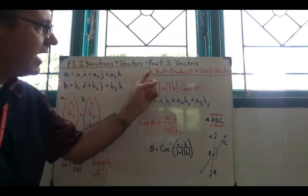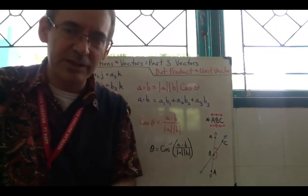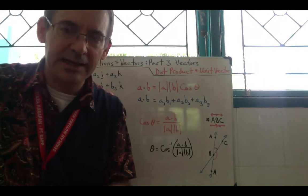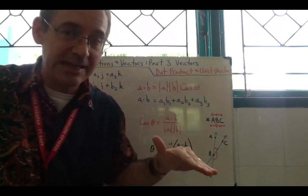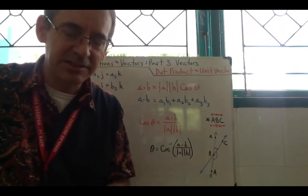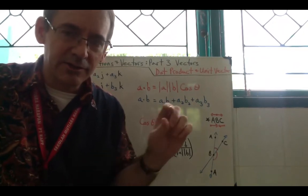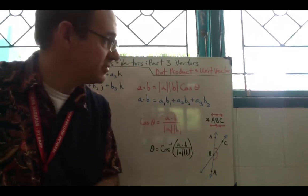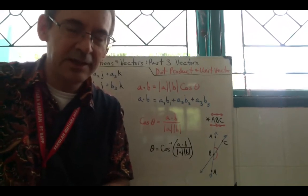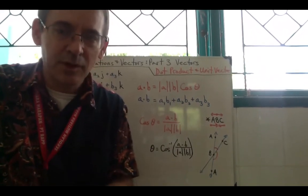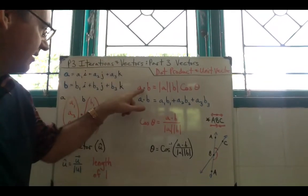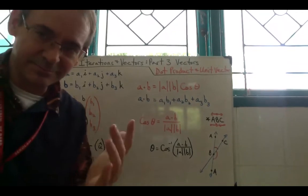The dot product is actually in your formula sheet. If you have a formula sheet from Cambridge, you can look at it — it's at the very end of the Pure Maths formula section, and you'll see a little section for vectors that gives the dot product. The dot product is also called the scalar product, depending on what term your teacher uses.